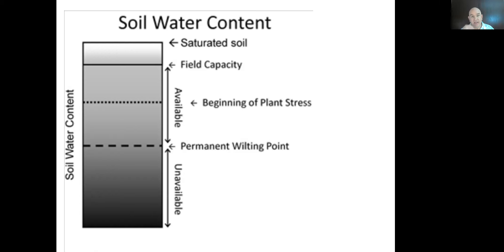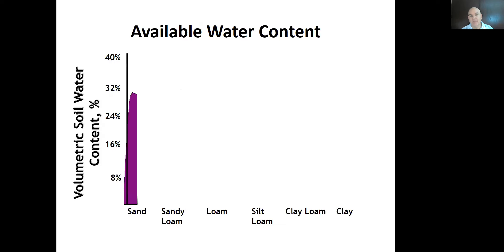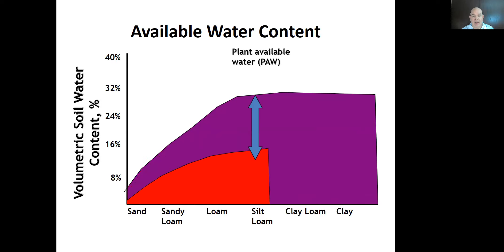At about halfway through the plant available water, we begin to see plant stress. For most things we want to avoid that. Some species are more tolerant to moisture stress — turf grass can actually benefit from a little stress in spring — but some plants like potato cannot be stressed without producing misshapen tubers. We typically want to turn on the irrigation system when about half of the plant available water is gone.